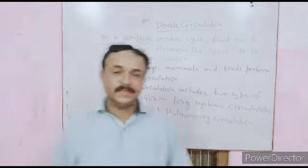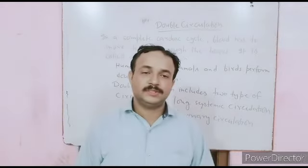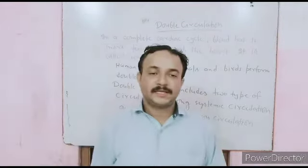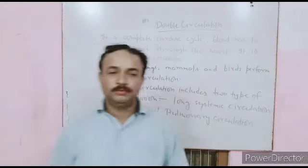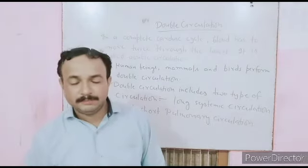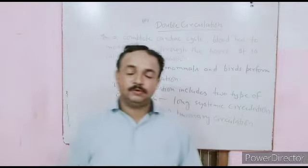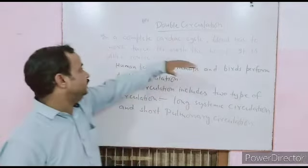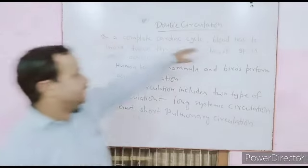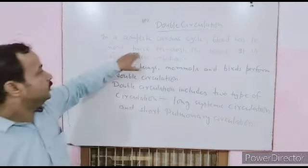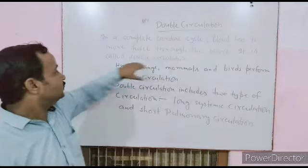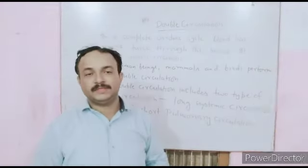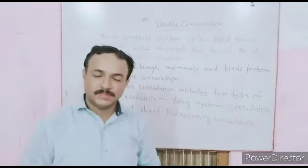First we will discuss what is double circulation. In a complete cardiac cycle, blood has to move twice through the heart. This is called double circulation.